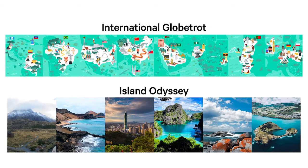As you can see here, our International Globetrot map on top is entirely illustrated, while our Island Odyssey map consists of photographs. Both maps are at the same scale.